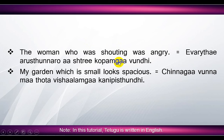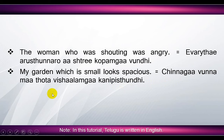'My garden which is small looks spacious' means 'chinnaga unna ma tota vishalanga kanipistundi'. Here, 'my garden' means 'ma tota' — actually 'my' means 'na', but here we can take the meaning of 'our', so 'our' means 'ma'. 'Garden' means 'tota', 'which is small' means 'chinnaga unna', 'small' means 'chinnaga'. 'Looks spacious' means 'vishalanga kanipistundi', 'looks' means 'kanipistundi', 'spacious' means 'vishalanga'.